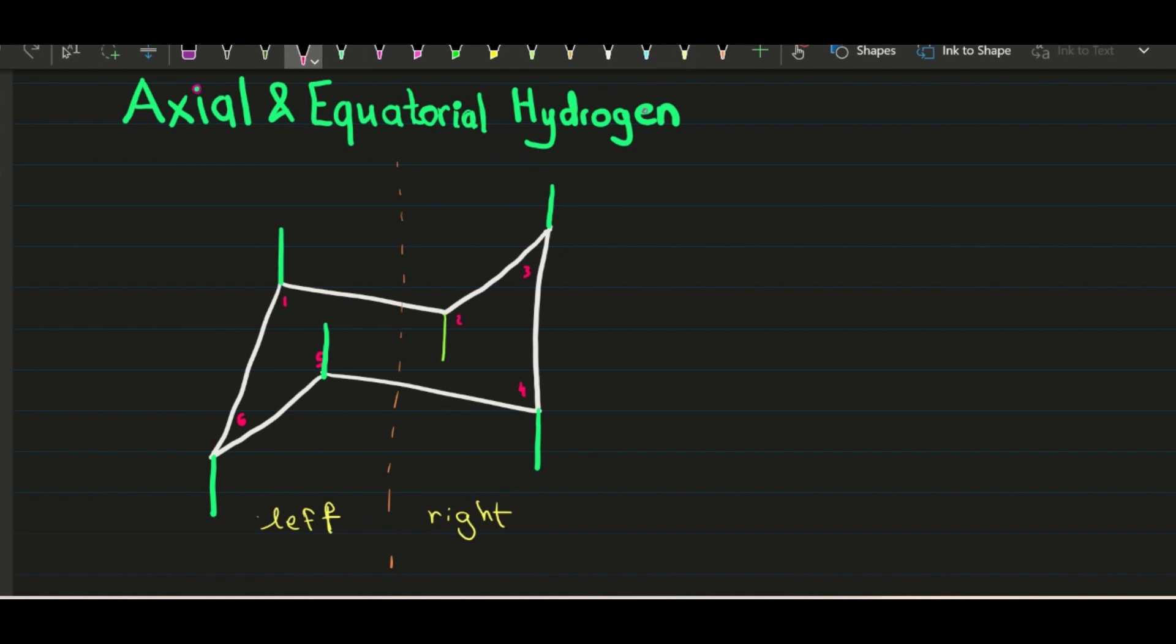So the next thing you do when you draw your equatorial hydrogens, for example carbon number one, it's not going to be pointing the same direction as axial position. It's going to be the opposite. So up, the opposite if up is down. But at the same time it's going to point down and left because it's on this side. So we're going to do this. So for carbon two it's going to be up but it's going to point right. So like that.